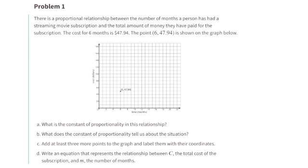There is a proportional relationship between the number of months a person has had a streaming movie subscription and the total amount of money they have paid for the subscription. The cost for 6 months is $47.94. The point (6, $47.94) is shown on the graph below.